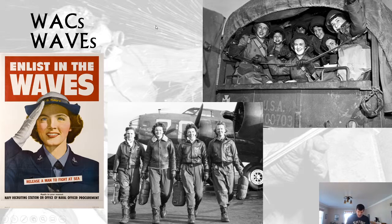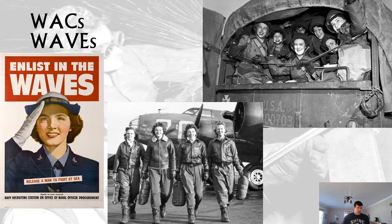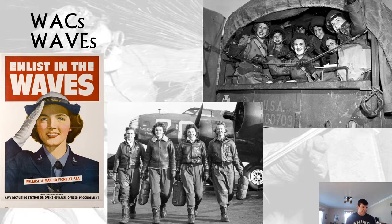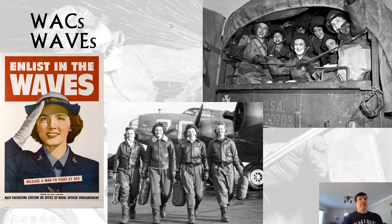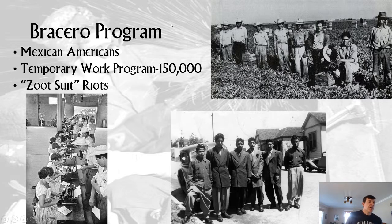As all this was happening, there would be a shortage of workers. A lot of farm workers in the late 1930s — the Okies, people kicked off their farms because of the sharecropping system or the Dust Bowl — were now getting jobs in factories. Now there was a shortage of agricultural workers, and that would lead to what's called the Bracero Program.